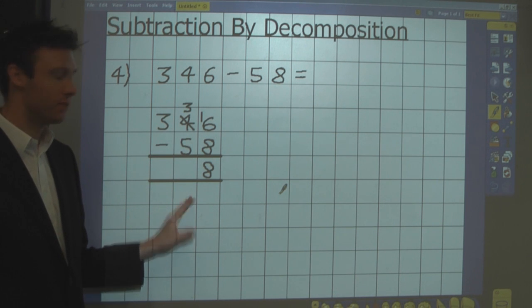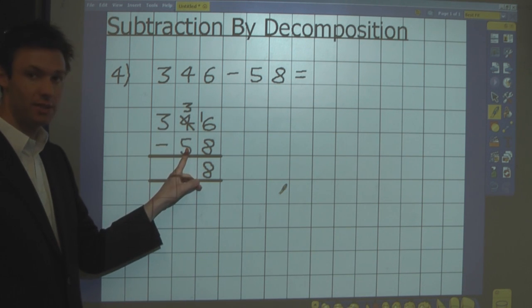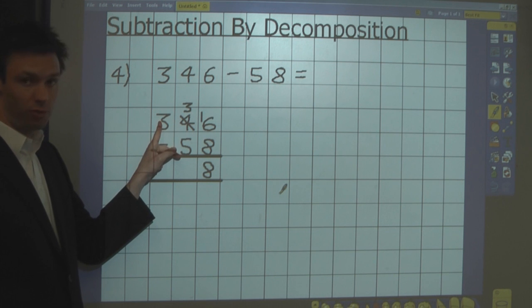Now I subtract the tens. 3 tens take away 5 tens. I can't do that, but I do have 3 hundreds.